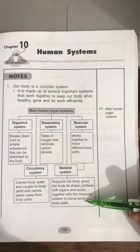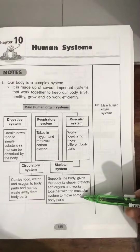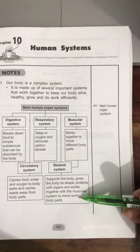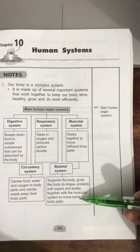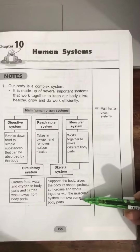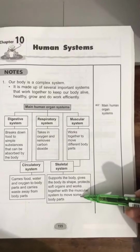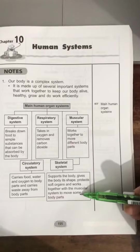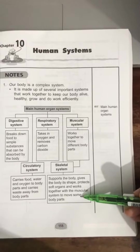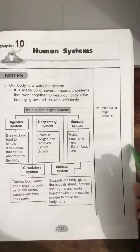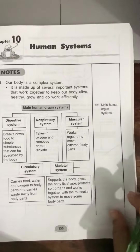The function of the skeletal system is to support the body, to give the body its shape, to protect soft organs such as the lungs and heart, and to work together with the muscular system to move body parts.